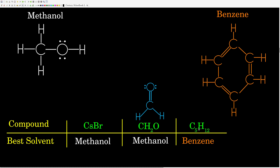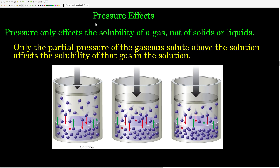And finally, for N-pentane, there are only carbons and hydrogens. Just knowing that there's only carbon and hydrogen in this, we know this is a non-polar molecule. As a solute, we want the most non-polar solvent, which would definitely be benzene.